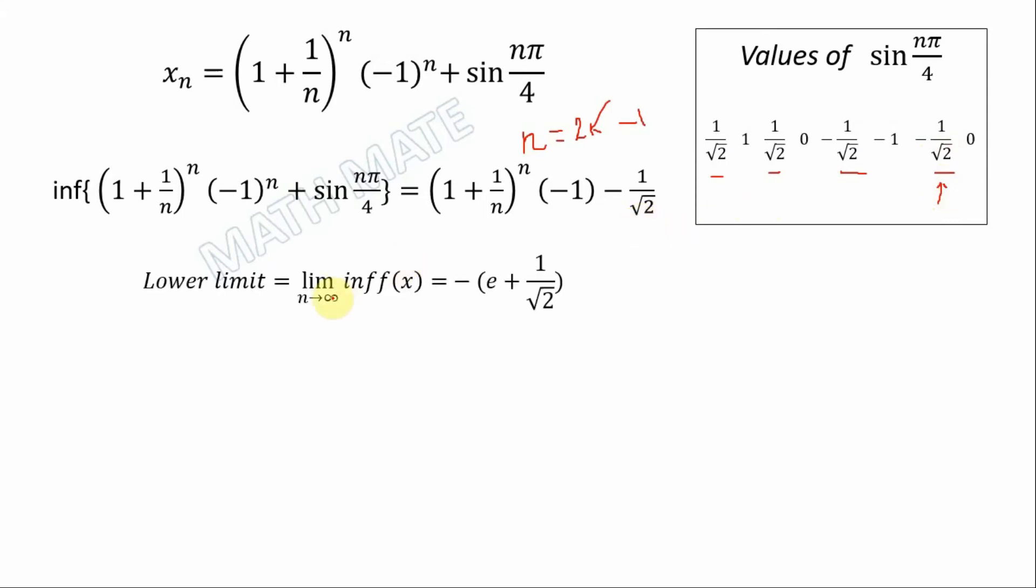And lower limit equals limit of infimum. When n goes to infinity in our expression, this multiplier goes to e, that's a very important equality. And if you put the sign of negative minus outside of parentheses we have minus e plus 1 divided by square root of 2. That's the lower limit of our xn.